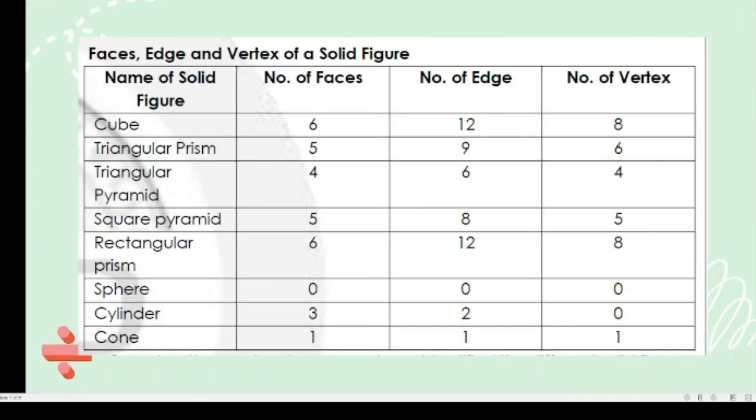Here are the faces, edges, and vertex of solid figures. The first column is name of solid figures, the next column is number of faces, number of edges, and the last column is the number of vertices. So take a look. A cube has 6 faces, 12 edges, and 8 vertices.